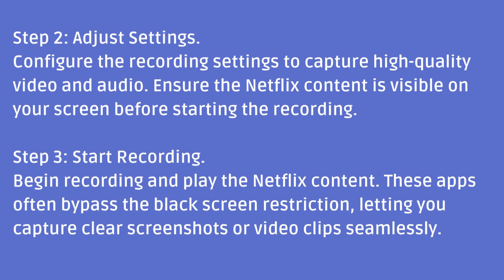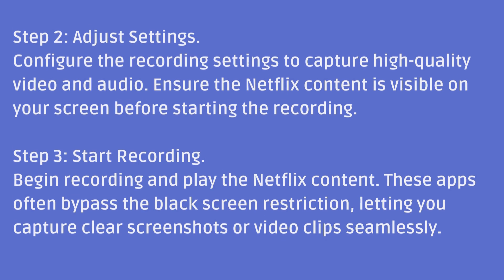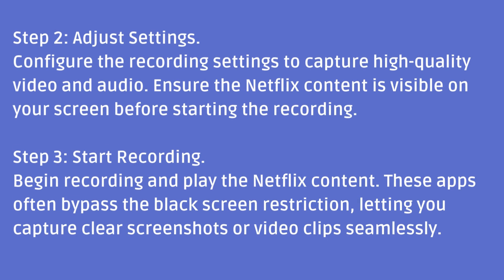Step 2: Adjust Settings. Configure the recording settings to capture high-quality video and audio. Ensure the Netflix content is visible on your screen before starting the recording. Step 3: Start recording. Begin recording and play the Netflix content. These apps often bypass the black screen restriction, letting you capture clear screenshots or video clips seamlessly.